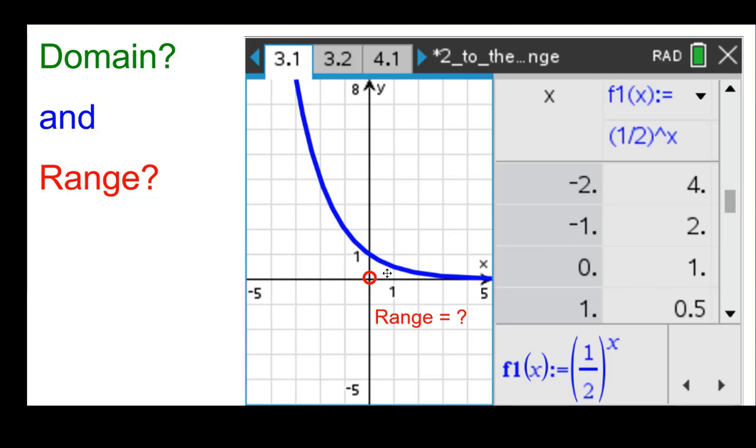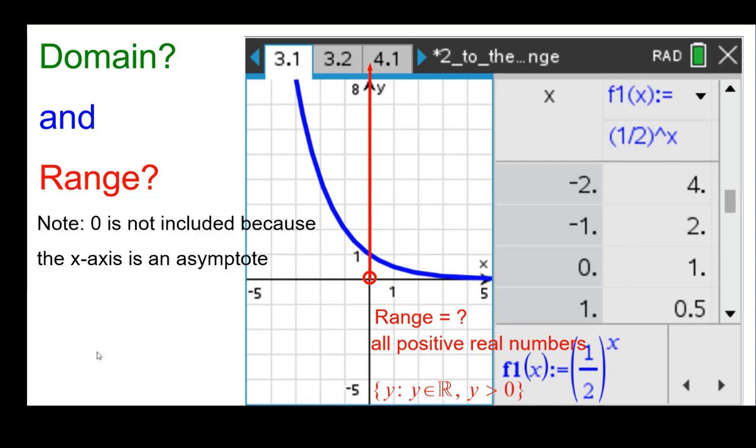The range is not all real numbers. In fact it starts at zero but does not include zero. And anything larger than that, it has either values on the left or x values on the right. So those are the positive real numbers. And the way we write that is the set of all y's, such that y is a member of the real numbers and y is strictly greater than zero. Note zero again is not included because the x axis is an asymptote. Strictly greater than zero.